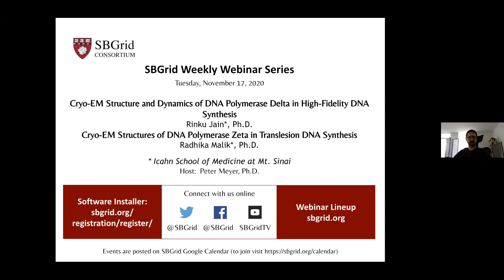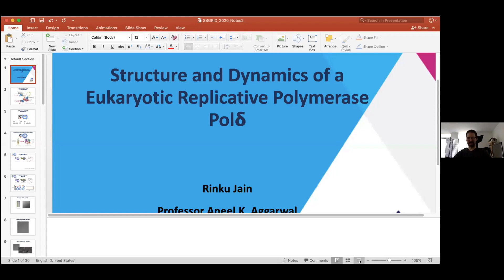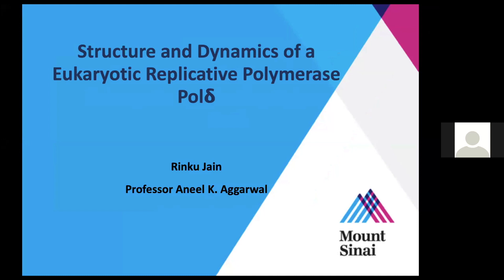Today we have two speakers both from the Icahn School of Medicine at Mount Sinai, and they're both going to be talking about prior William structures. Our first speaker is Vrinka Jain, an assistant professor at the School of Medicine, and she'll be talking about the structure and dynamics of DNA polymerase Delta and high fidelity DNA synthesis.